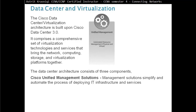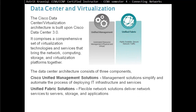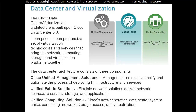The data center architecture consists of three components. The Cisco Unified Management Solution simplifies the process of deploying IT infrastructure and services. The Unified Fabric Solution is a flexible networking solution that delivers networking services to servers, storage, and applications. The Unified Computing Solution is a next-generation data center system that unifies computing, network, storage access, and virtualization.